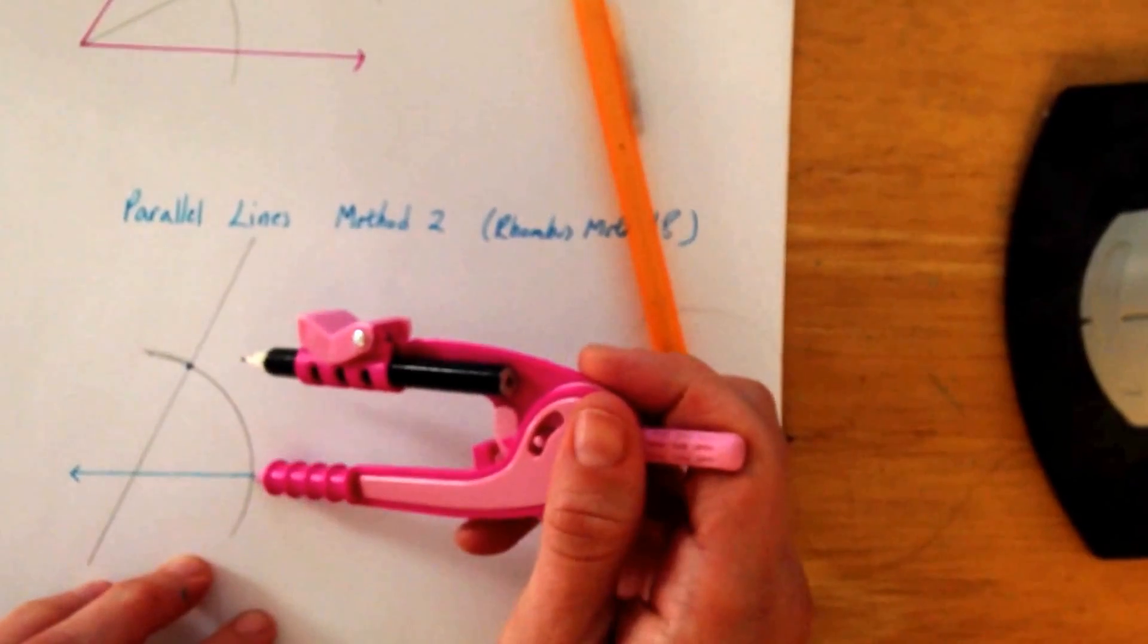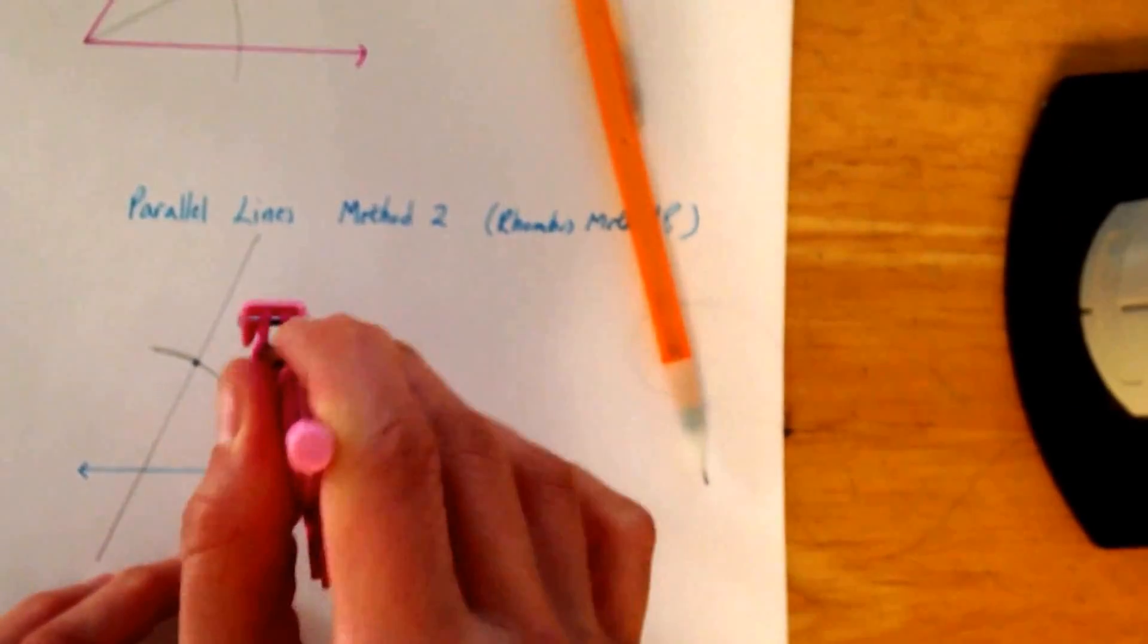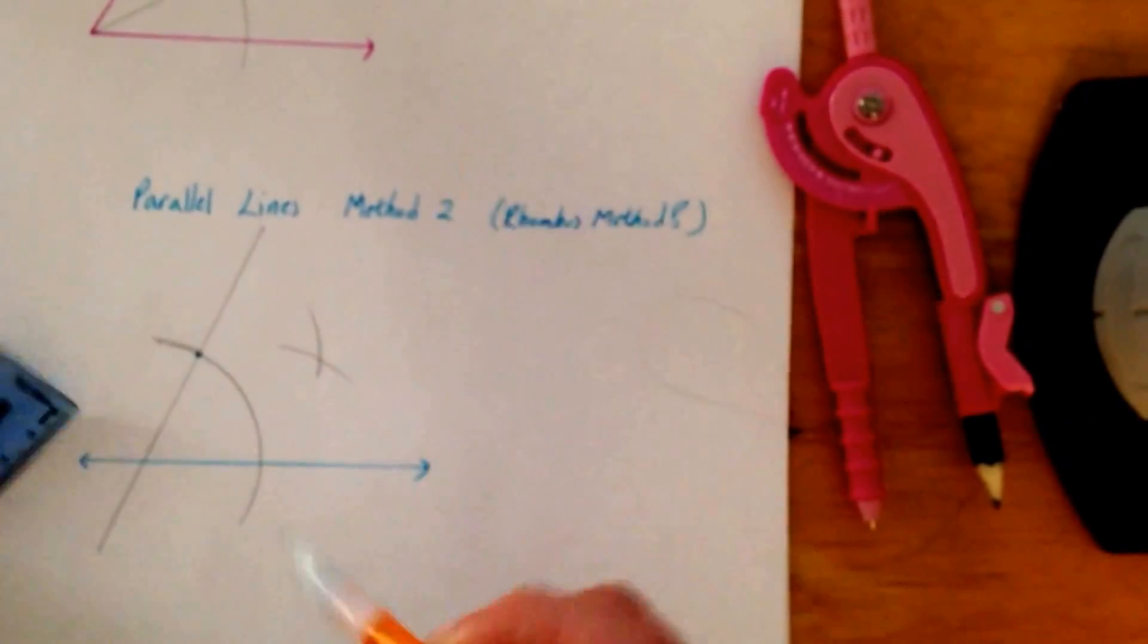and then from each of those endpoints, just like we did up there, draw two little, tinier arcs there, and there, and go ahead and connect,